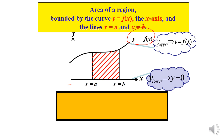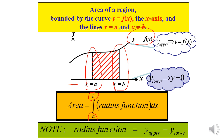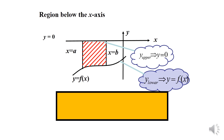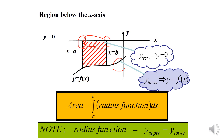The area is equal to the integration of the radius function dx from a to b. Note that the radius function equals y_upper minus y_lower. For the region below the x-axis, y_upper and y_lower are identified similarly, and the formula remains the same: area equals the integration of the radius function dx from a to b, where the radius function is still y_upper minus y_lower.